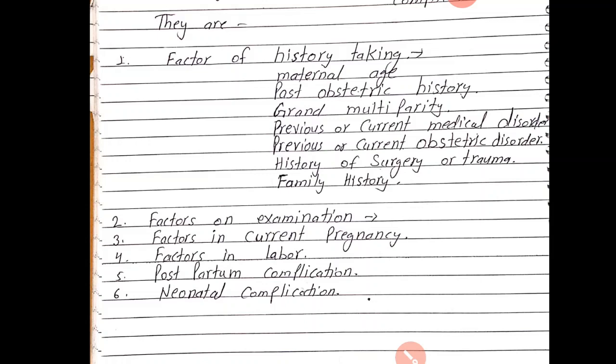Ya phir hypertension ho, ya anemia, ya phir pehle ki koi cardiac, respiratory, orthopedic, ya neurological disease ho. Ya phir genital prolapse ki condition ho, old cervical tears ya phir dilated cervix jaise cervical incompetence — cervical incompetence mein cervix dilate hota hai — to woh bhi high risk mein aata hai.